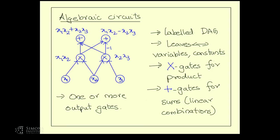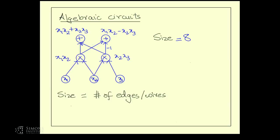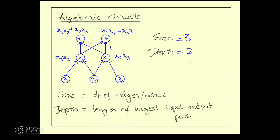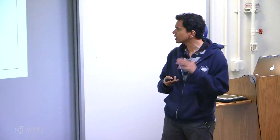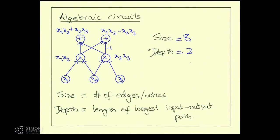Feel free to stop me at any time — at least the first half will be fairly slow-paced with lots of time for questions. So that's an algebraic circuit. Whenever you have a computational model, you want notions of efficiency. The main notion of efficiency here is the size of the circuit, which is the number of edges in the graph. There are two reasonable ways to define size — the number of edges and the number of vertices — and they're off by at most a quadratic factor. Another notion is the depth, which is the longest input-to-output path. Here the depth is two. Small depth circuits correspond to efficient parallel algorithms.